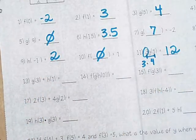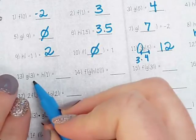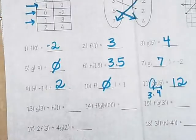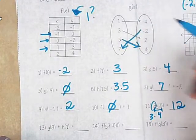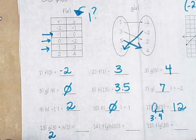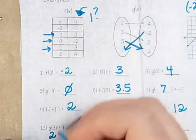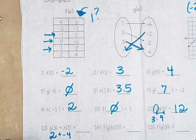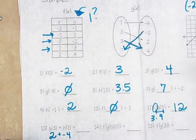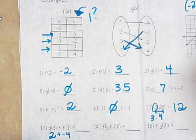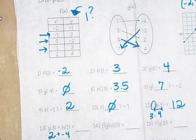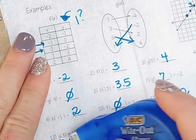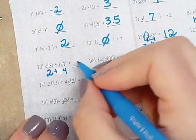g(3) + h(1). So you got to find each one of those and then add them together. g(3) is 2. h(1), negative 4. Oh, okay. Sorry. Thank you. h(1) is positive 4. So it'd be 2 plus 4, which is 6.